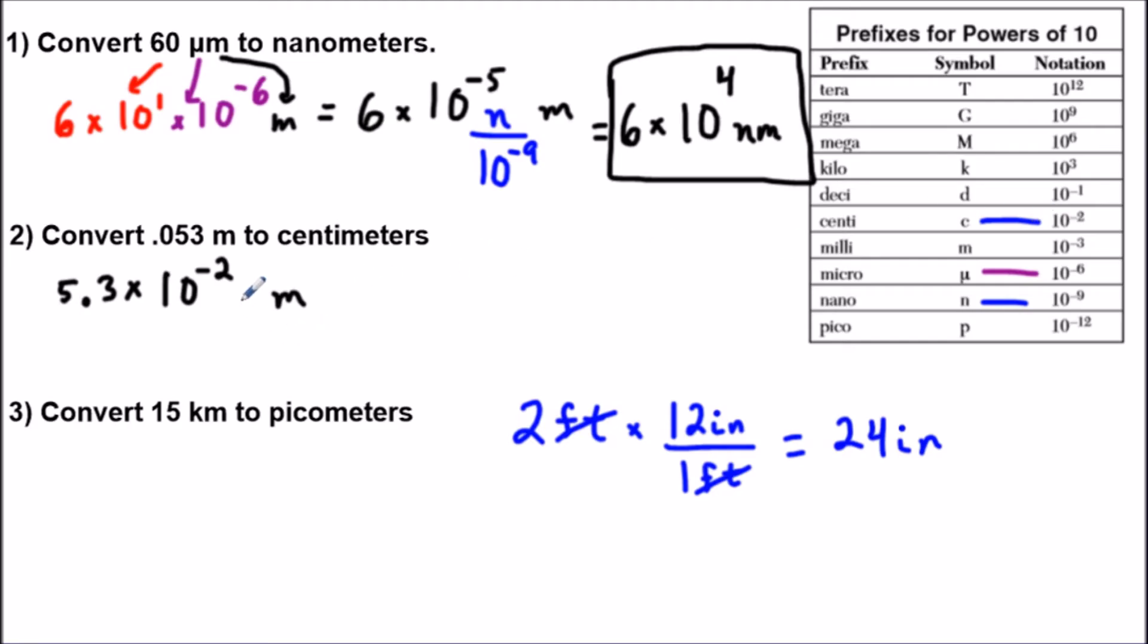So same concept as before, I could introduce the prefix lowercase c, but then I have to divide by the corresponding power of 10, which is 10 to the negative 2. So in this situation here, I could cross off 10 to the negative 2 because they're matching terms. So when I multiply 10 to the negative 2 by 1 over 10 to the negative 2, they just cancel out.